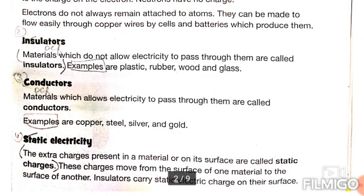Important short question: Differentiate between insulators and conductors. Insulators are materials which do not allow electricity to pass through them. Examples are plastic, rubber, wood, and glass.